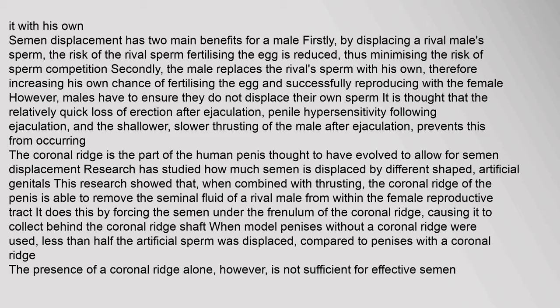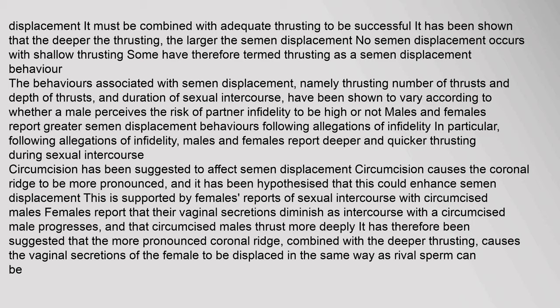The coronal ridge is the part of the human penis thought to have evolved to allow for semen displacement. Research showed that when combined with thrusting, the coronal ridge is able to remove the seminal fluid of a rival male from within the female reproductive tract by forcing semen under the frenulum of the coronal ridge, causing it to collect behind the coronal ridge shaft. When model penises without a coronal ridge were used, less than half the artificial sperm was displaced. The presence of a coronal ridge alone is not sufficient; it must be combined with adequate thrusting, and deeper thrusting results in larger semen displacement.